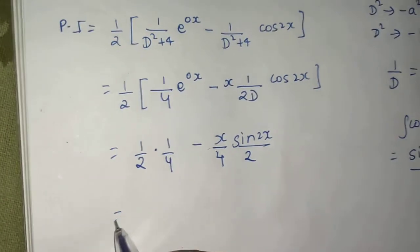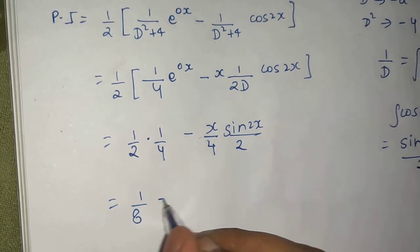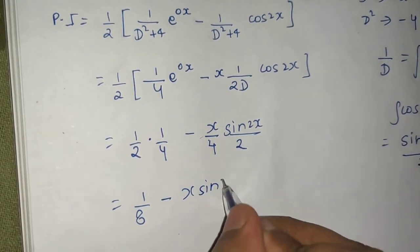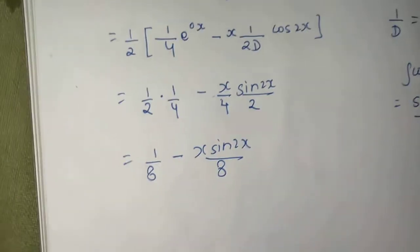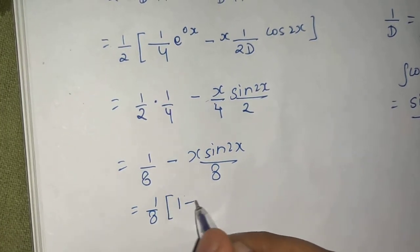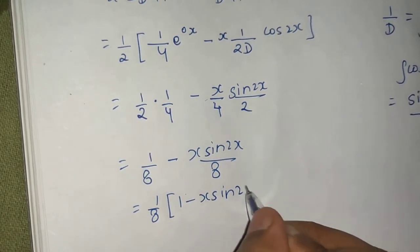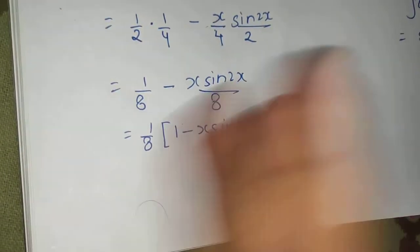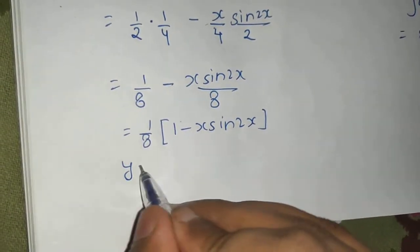Fine, so you are getting 1 by 8 minus x sin 2x divided by 8. So you can take 1 by 8 common: 1 minus x sin 2x.